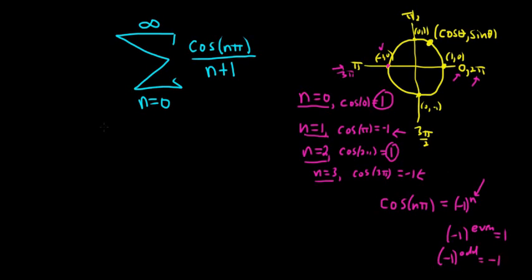So this will work. So we can rewrite our infinite sum as the sum from 0 to infinity of negative 1 to the n over n plus 1.